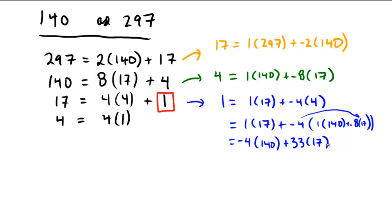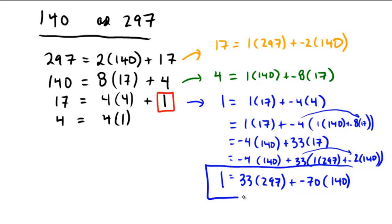Now let's get rid of the 17 by using the orange. We get negative 4 times 140 plus 33 copies of the 17, which is 1 times 297 plus negative 2 times 140. So again, collecting like terms, it looks like we have 33 times 1, so we have 33 copies of 297. From here we're going to get negative 4, so we're going to get plus negative 70 copies of the 140, and there we go. We have written 1 as a linear combination of 297 and 140 using the Euclidean algorithm.